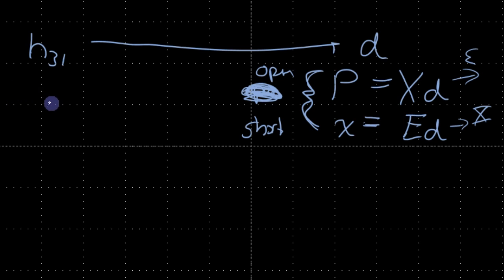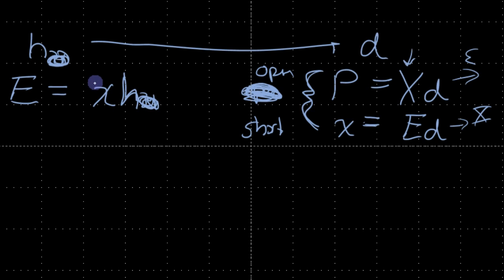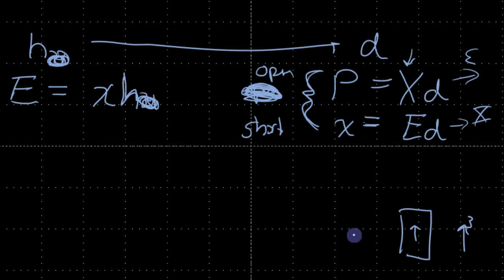For H31, the way it's defined is different — because this is defined in terms of applied strain, not applied stress. We usually talk about things in the 3-3 direction — that's the direction of polarization — so we usually talk about stresses and strains in the three direction.